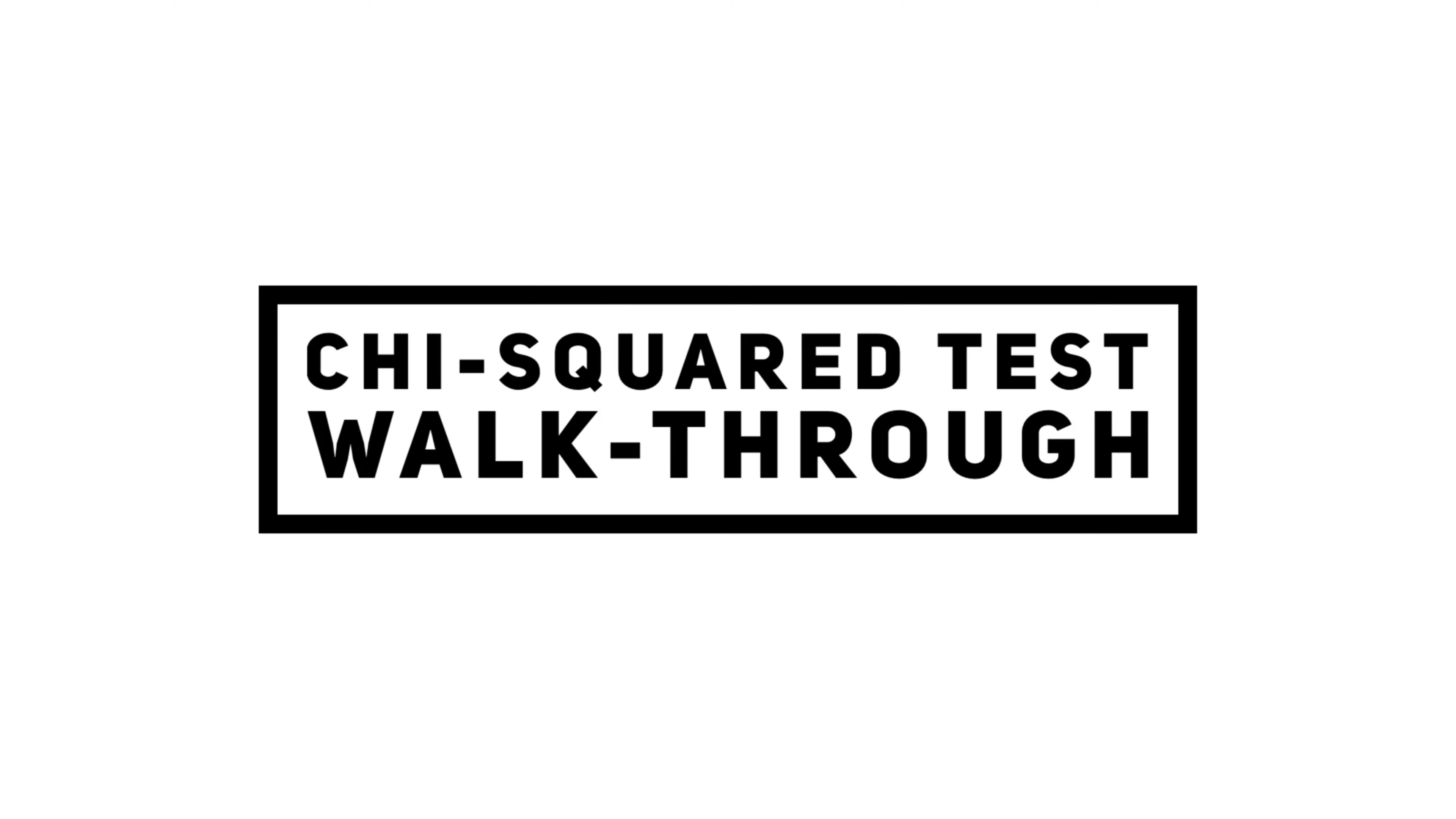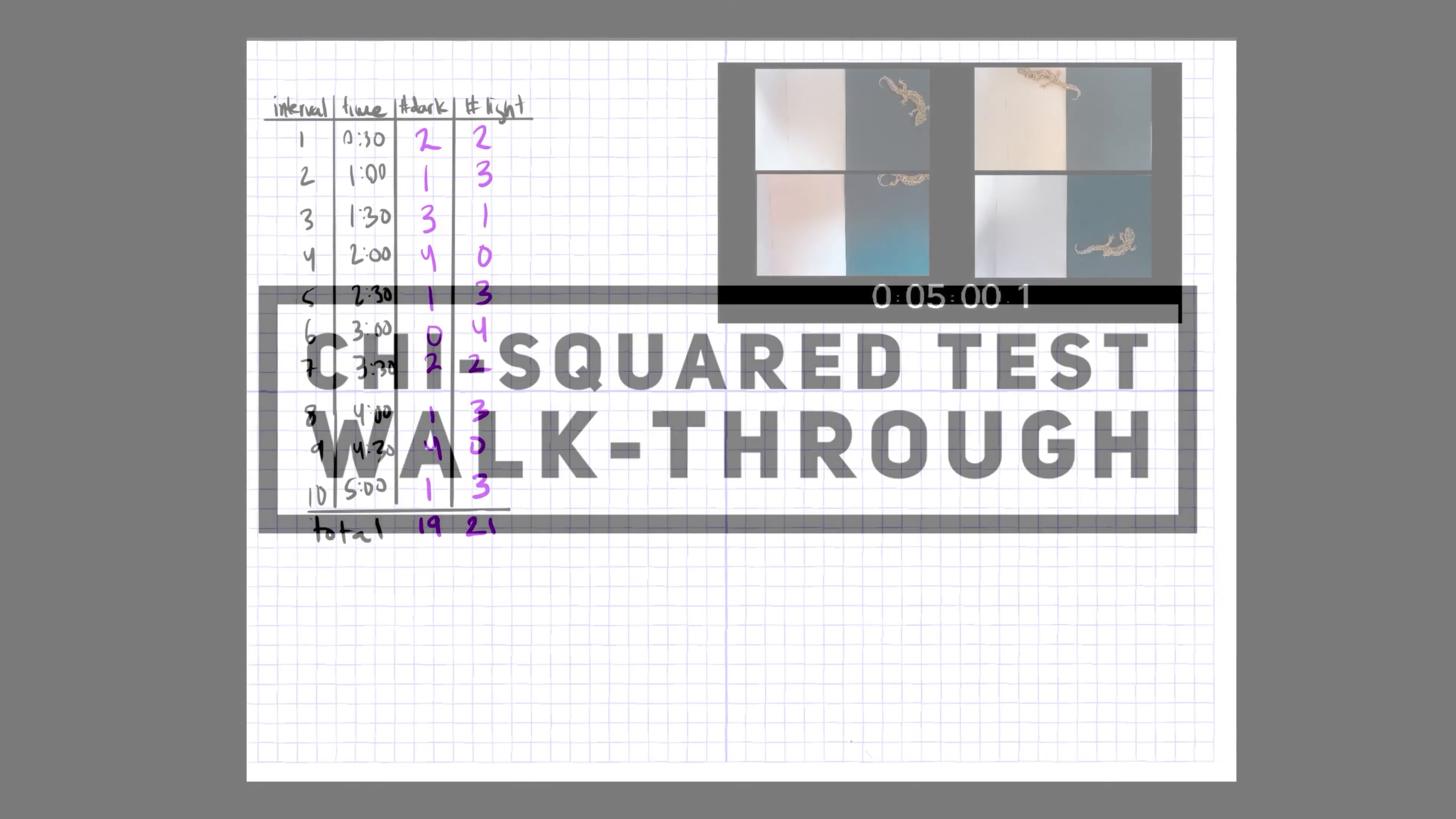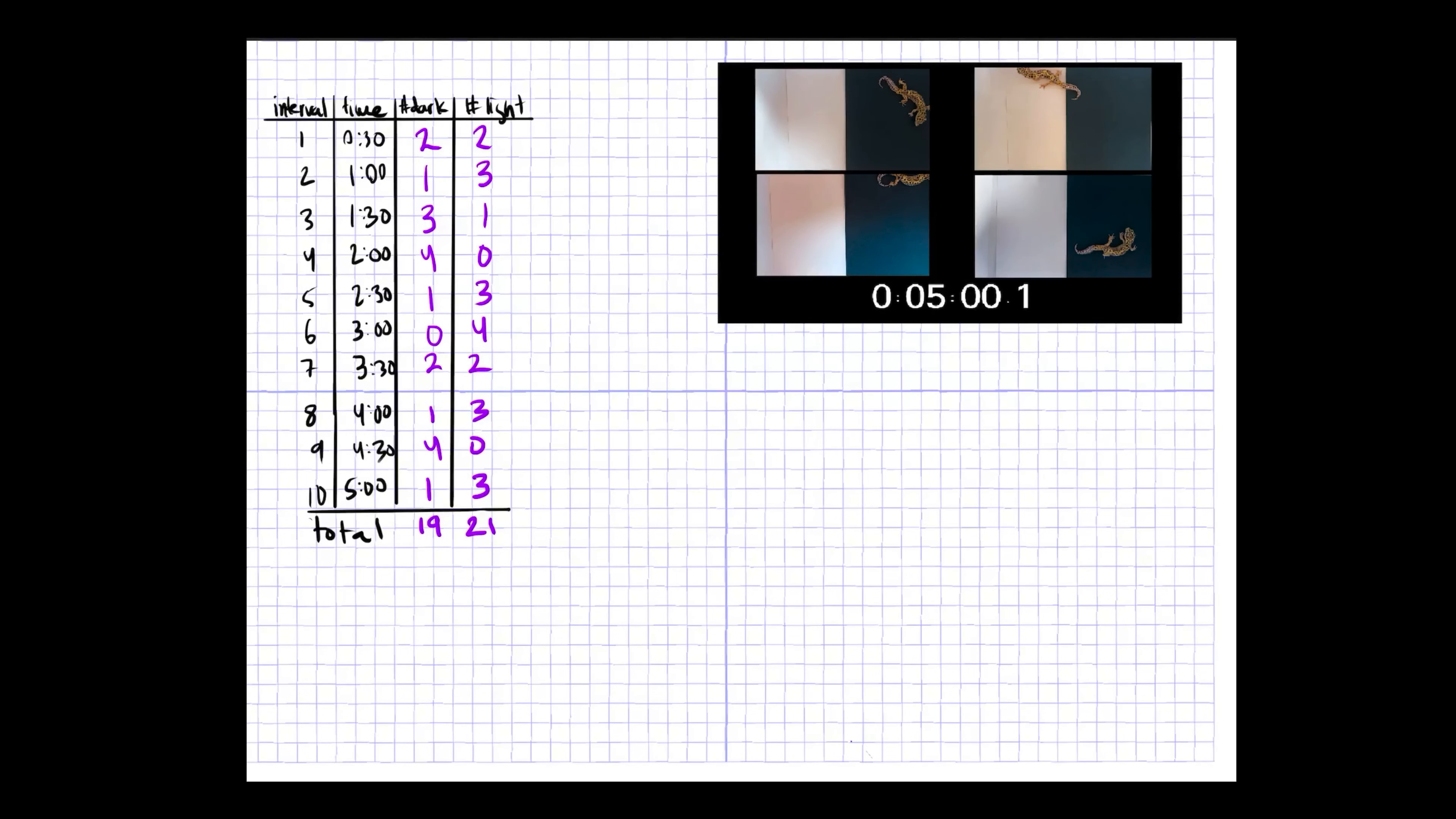Now that you've collected data from the gecko video, it's time to use a statistical test to see whether the differences in the numbers between the two different groups are due to chance or they're significant. To do that, we're going to use a statistical test called the chi-squared test.